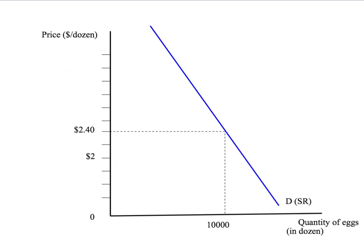Let's see how elasticity changes over time in a simple market. We'll look at the market for eggs. We've got the price of eggs up here on the vertical axis, and we've got a demand curve on here. Given the price of $2.40 — that will be our starting price — the initial quantity demanded is 10,000 dozen eggs. I've labelled this demand curve with a little SR, which is going to mean short-run. This demand curve is going to capture the impact effect — it answers the question: if the price of eggs changes, how does the quantity of eggs that people would like to buy change in the short-term, very soon after the price changes?